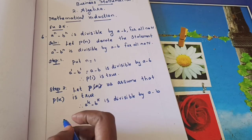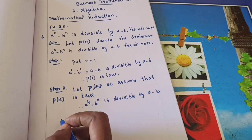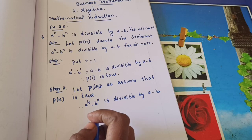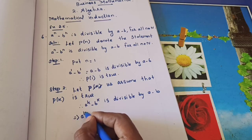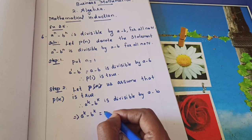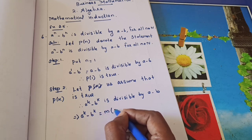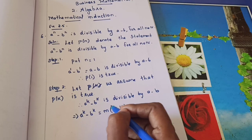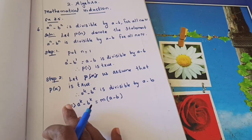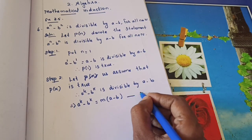Since aᵏ minus bᵏ is divisible by (a minus b), we can write it as m into (a minus b), where m is a constant. For example, if something is divisible by 7, we write 7 times m. Similarly, aᵏ minus bᵏ equals m(a minus b). Take this as equation number 1.